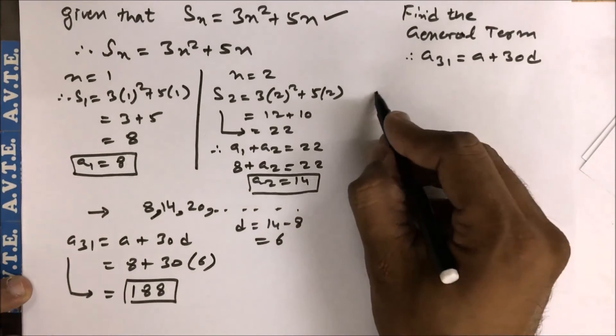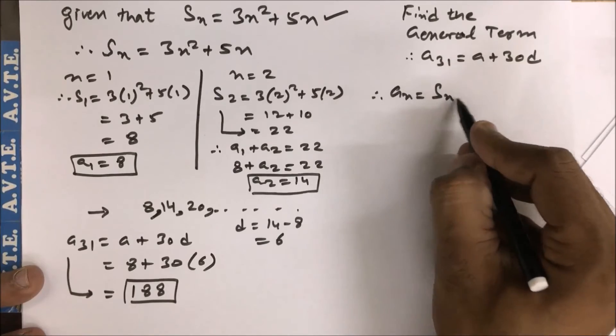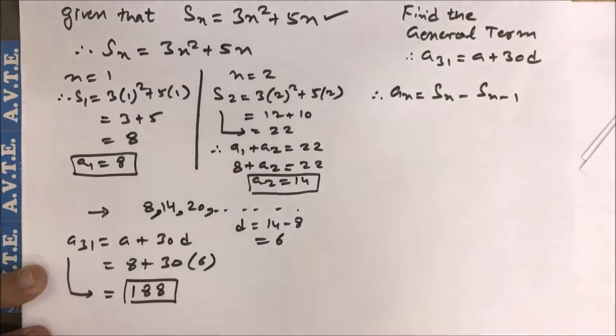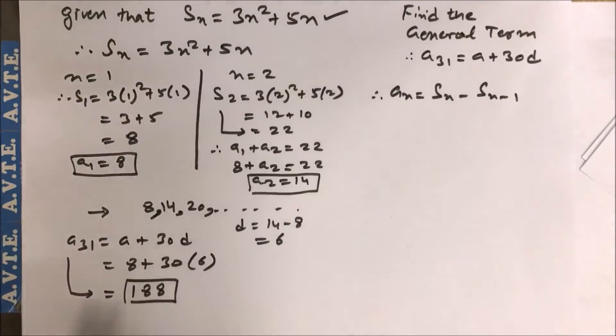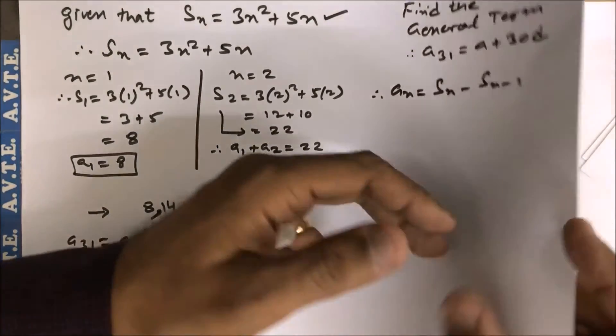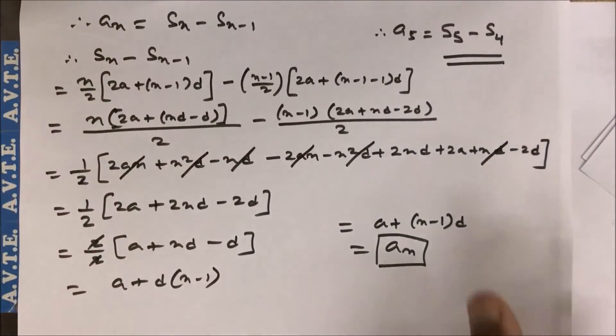Got it? But in the previous video when I told you aₙ is Sₙ minus Sₙ minus 1, I think you remember this thing also. In the previous video you can watch the video how to find like this.